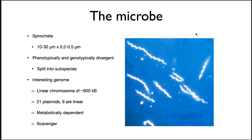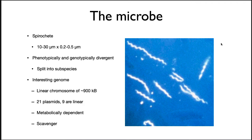B. burgdorferi is a spirochete. Looking at the photomicrograph, you might think it has a wavy morphology, but it's more like a corkscrew, and this shape is important in its pathology. Analysis of sequencing data from isolates has shown that the bacteria causing this disease are phylogenetically and genotypically divergent — meaning it appears there is not one species that causes this illness, but a collection of related bacteria that split into subspecies. The most important feature seems to be the ability to exist in a tick and a mammal and have this corkscrew morphology. It has an unusual genome with one linear chromosome and 21 plasmids, nine of these being linear. B. burgdorferi is dependent upon its host and is an excellent scavenger of nutrients from it.